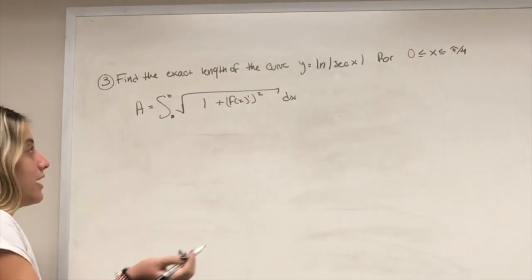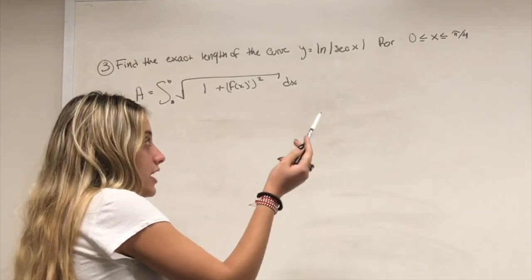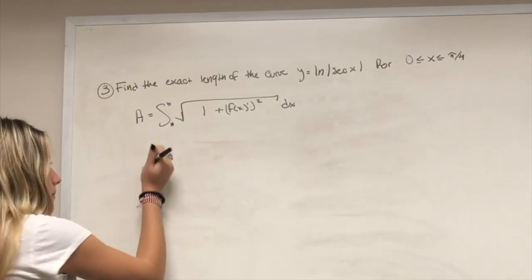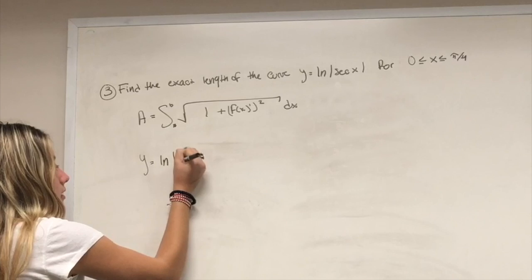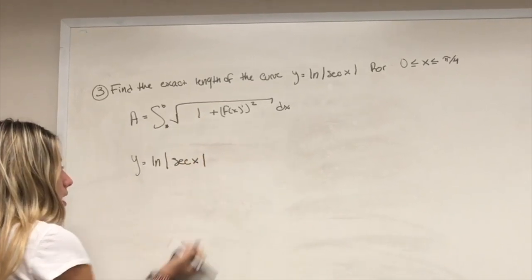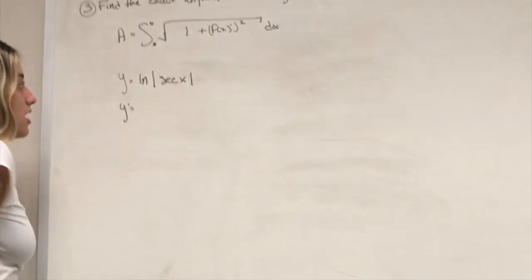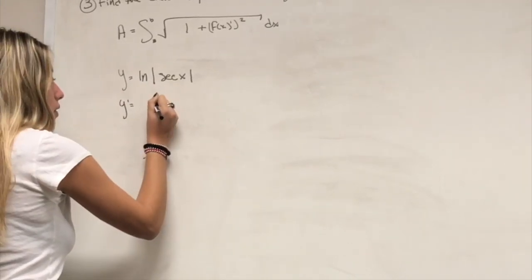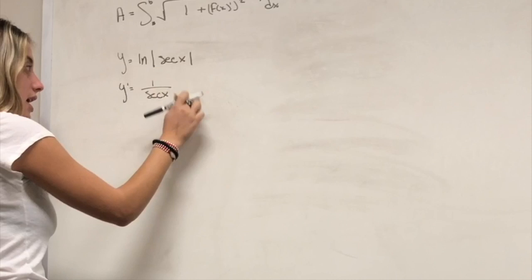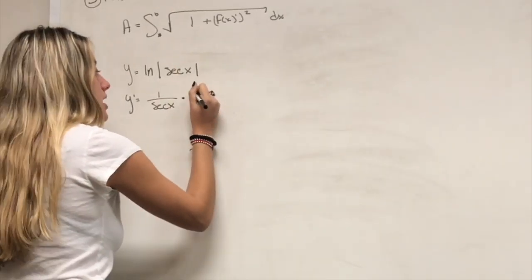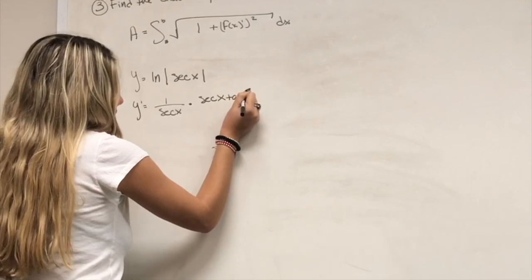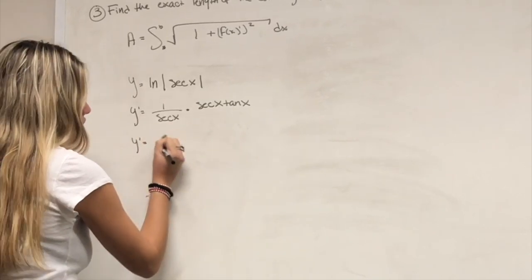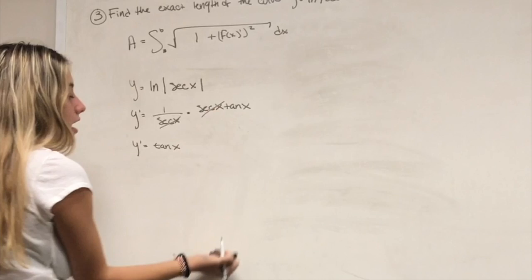Question 3: find the length of the curve y = ln(sec x) on the given interval. For the derivative, use the chain rule: d/dx[ln(sec x)] = (1/sec x)·sec x·tan x. The sec x terms cancel, giving y' = tan x.